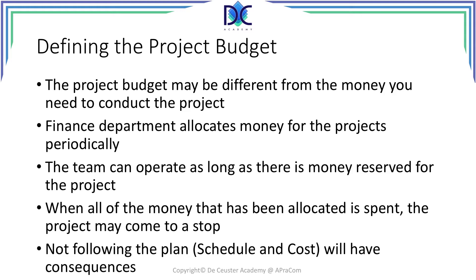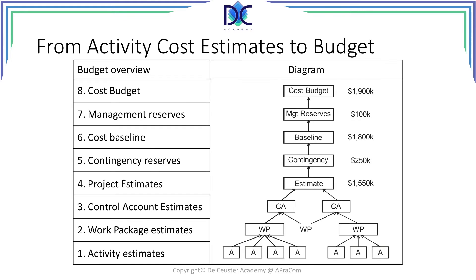As long as you still have money in your allocated budget you can continue to work. When all that money is spent, you may have to stop working on the project. Of course, when you're not following the planned schedule and cost, it may be a problem — you may need the money faster when you're ahead of schedule, or you may need more money when you're over budget. So it's a very important element to understand how the project budget looks.